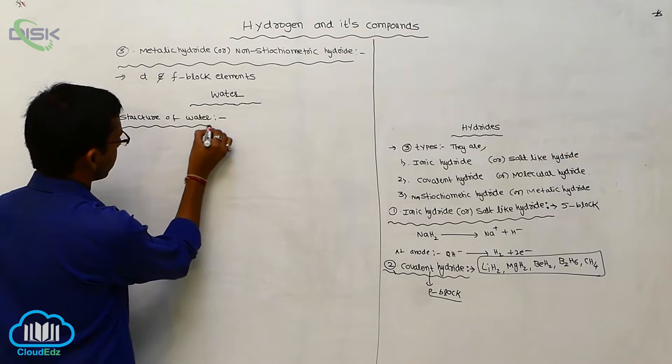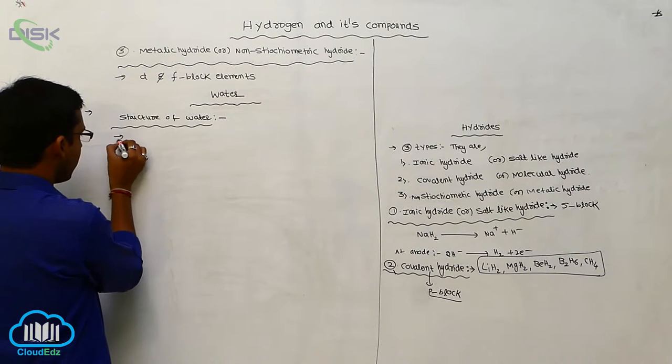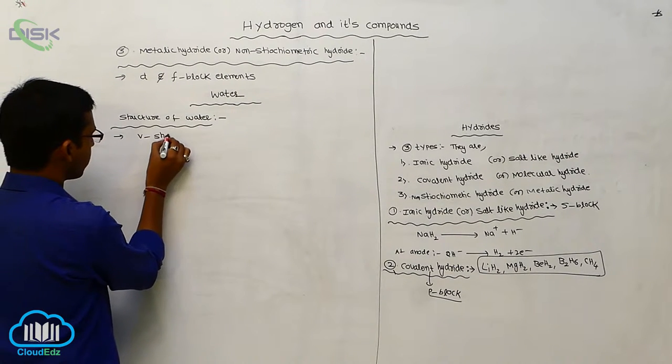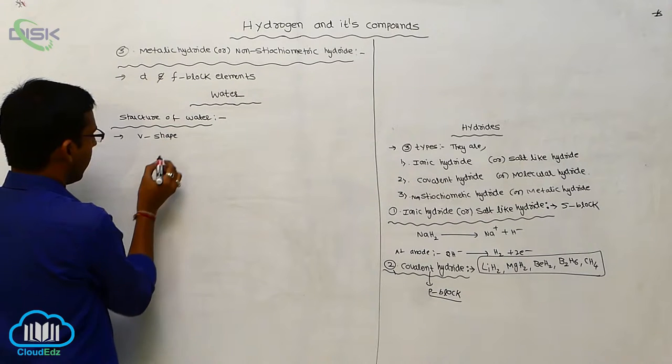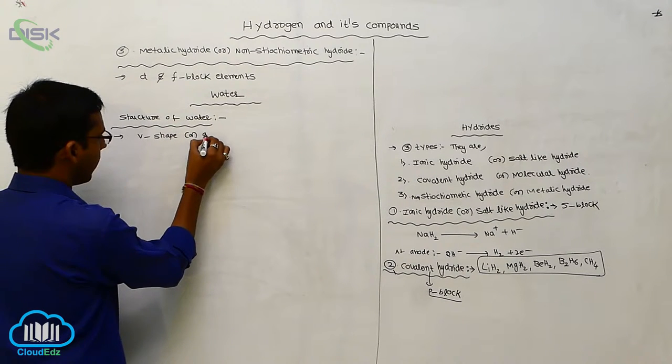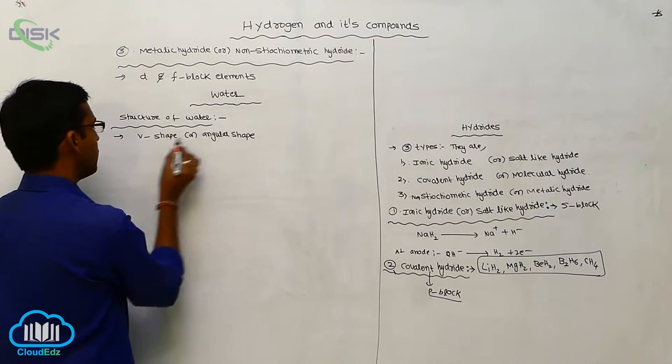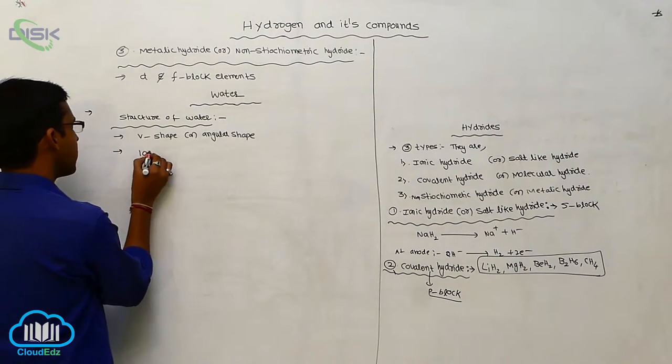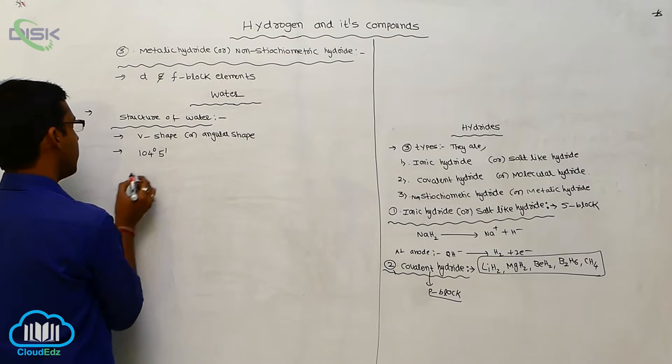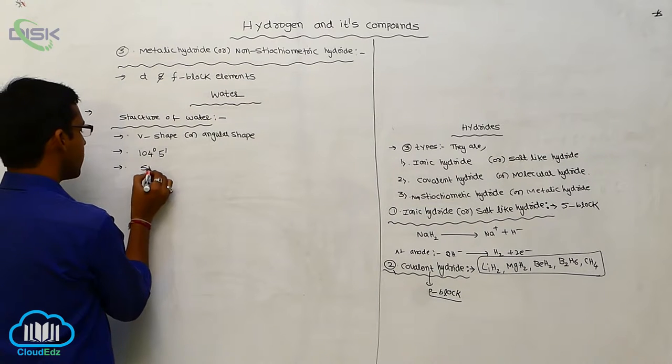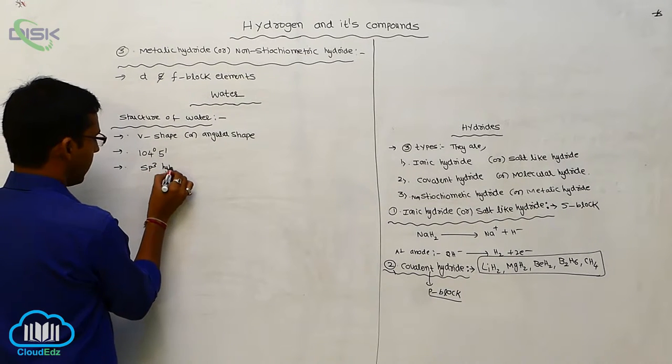Structure of water. The water shows V shape or angular shape. Its bond angle is 104 degrees 5 minutes. It undergoes SP3 hybridization.